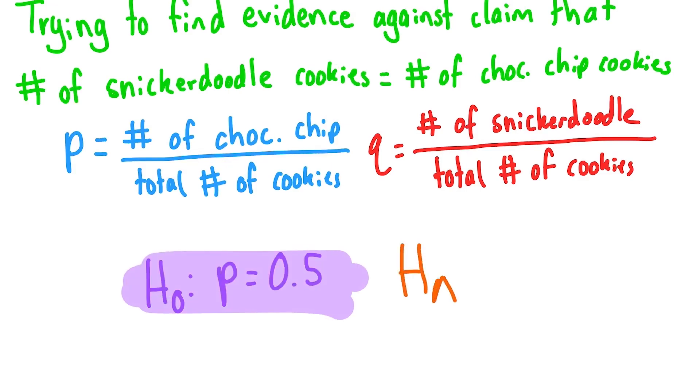Since we are doing a left-sided test, our alternative hypothesis will be that p is less than 0.5, since our friends suspect that there are secretly more snickerdoodle cookies in the bag.